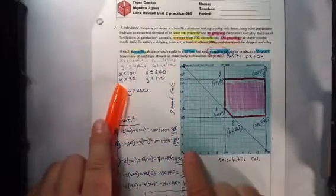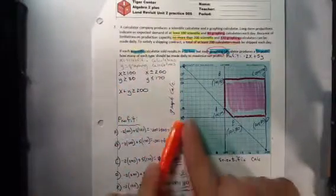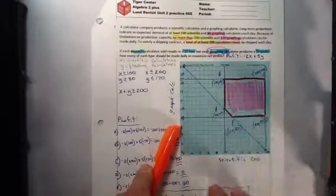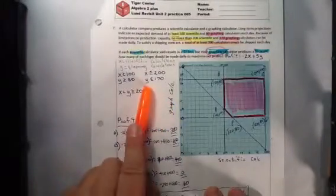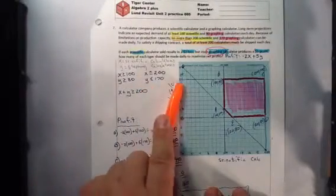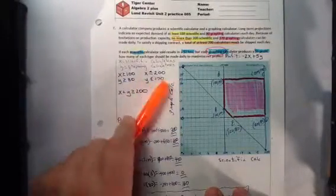Now on the Y axis, the graphing calculators. Go up to 80, draw a horizontal line, and that's everything above. Then we'll go to 170 on the Y axis for the graphing calculators, draw a line, everything less than.